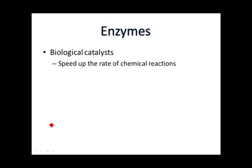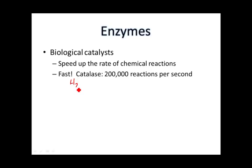For example, catalase is an enzyme that's found in all cells. It breaks down hydrogen peroxide, H2O2, which is a byproduct of many metabolic reactions and is poisonous to cells. Most cells have catalase, and it catalyzes the reaction of hydrogen peroxide down to water and oxygen, which are harmless. It happens at about 200,000 reactions per second.